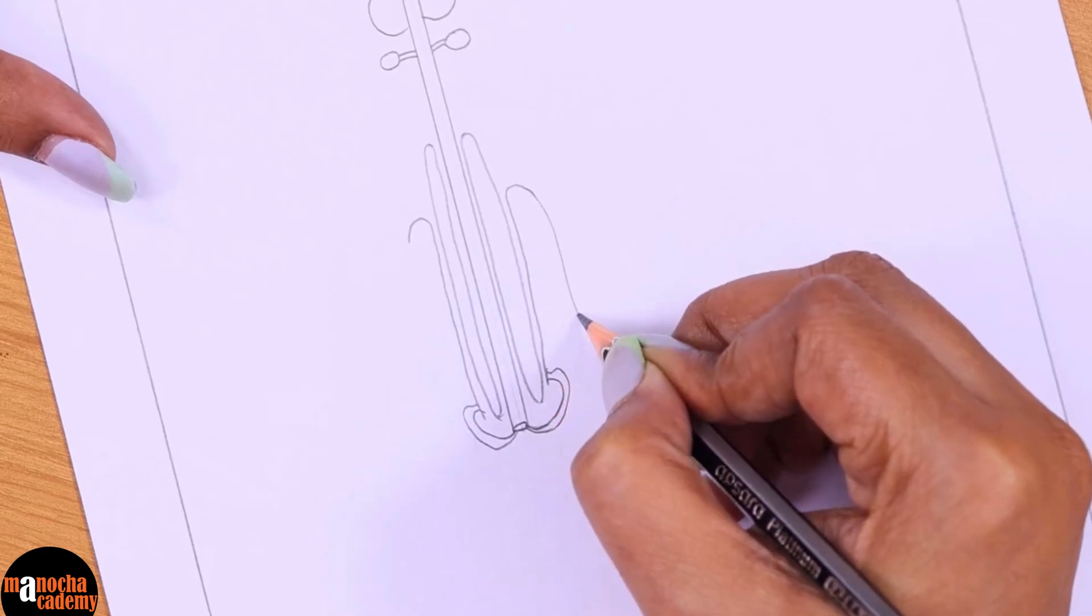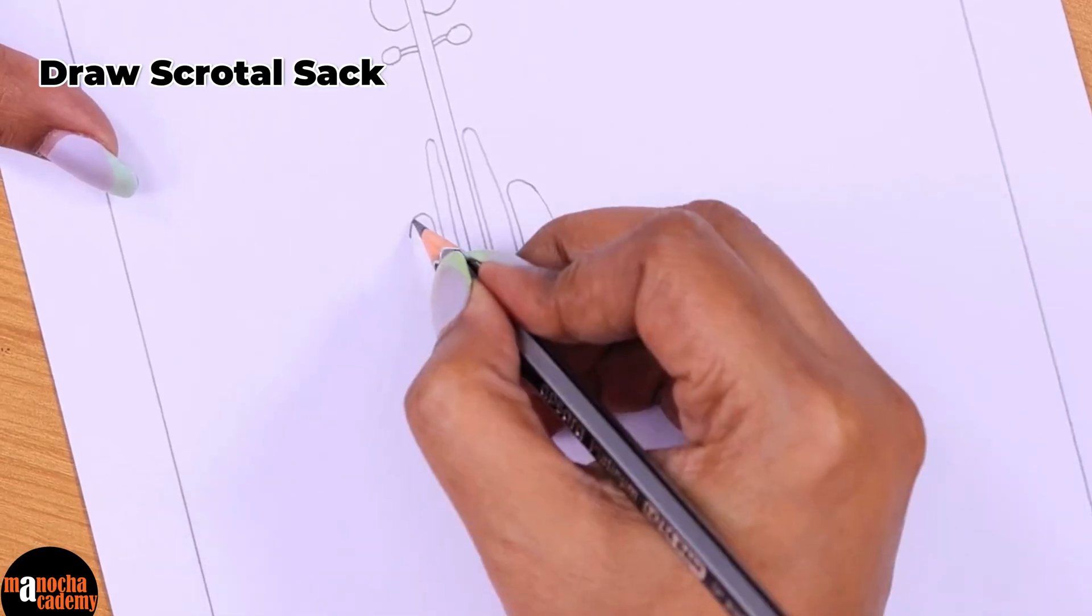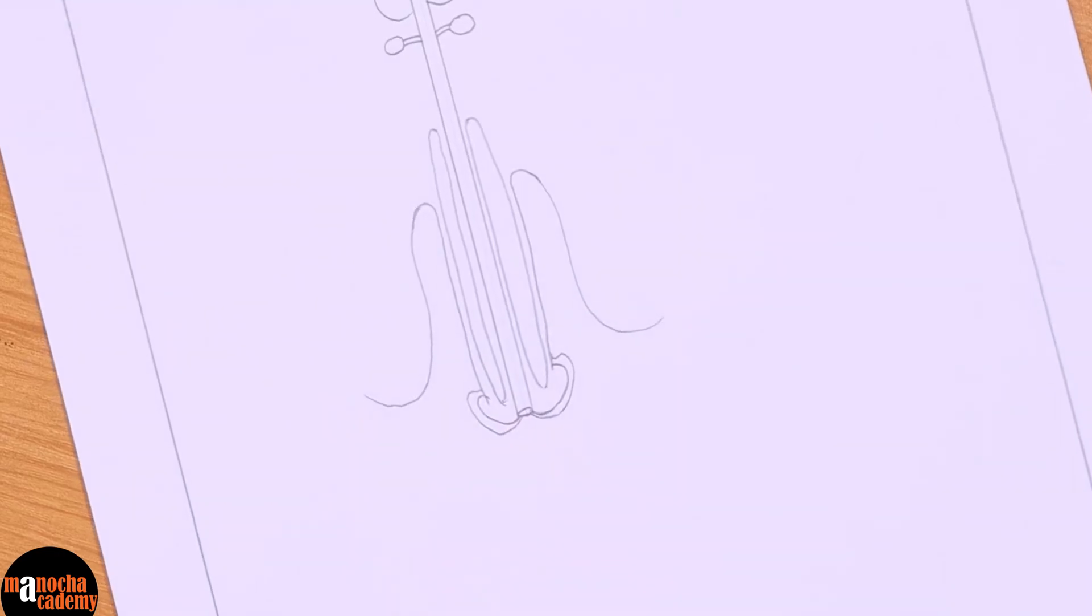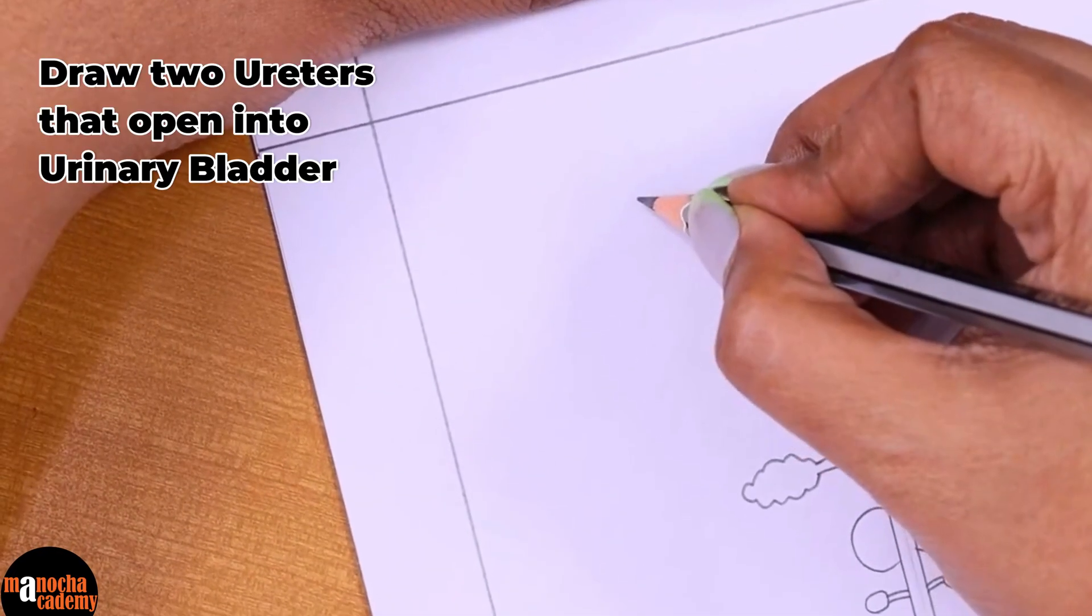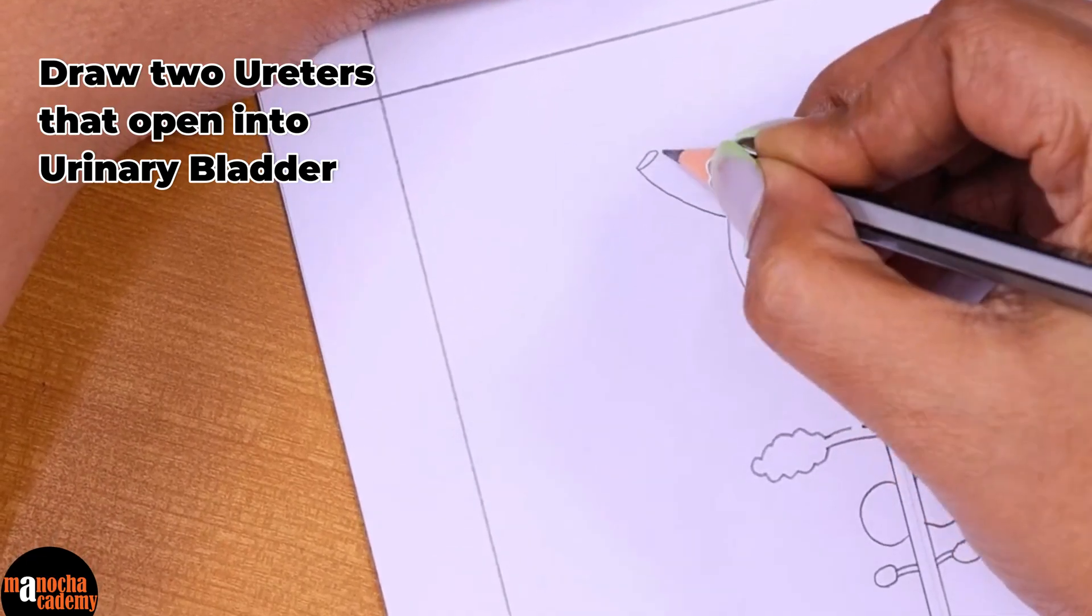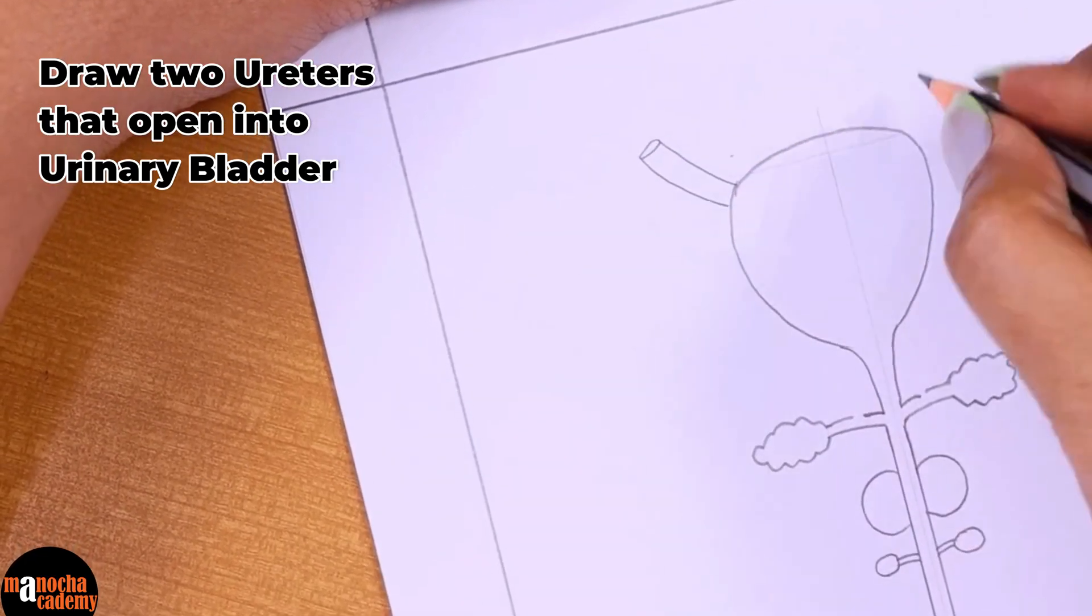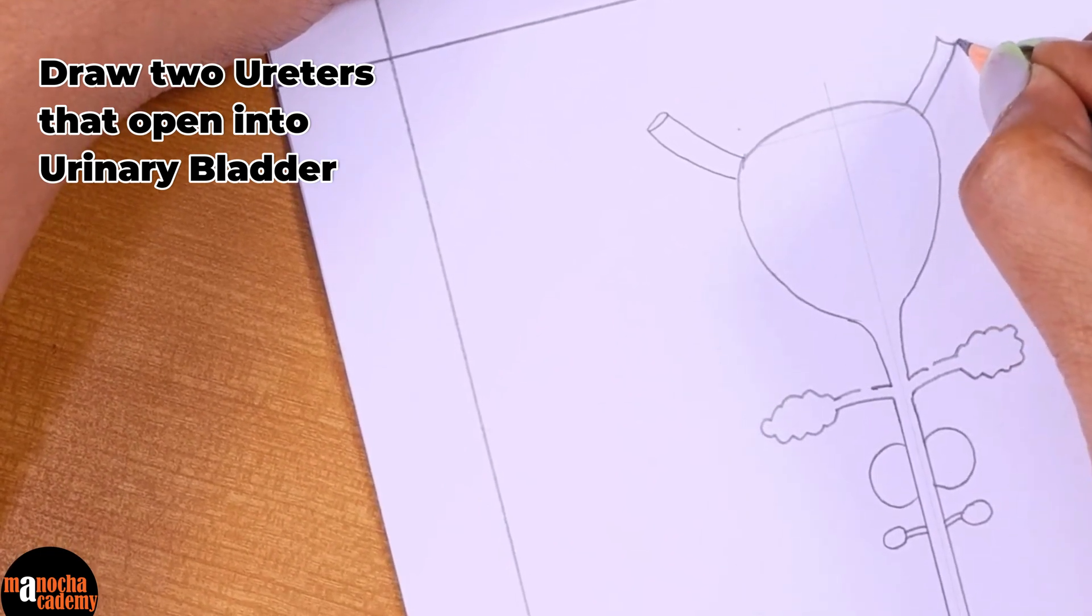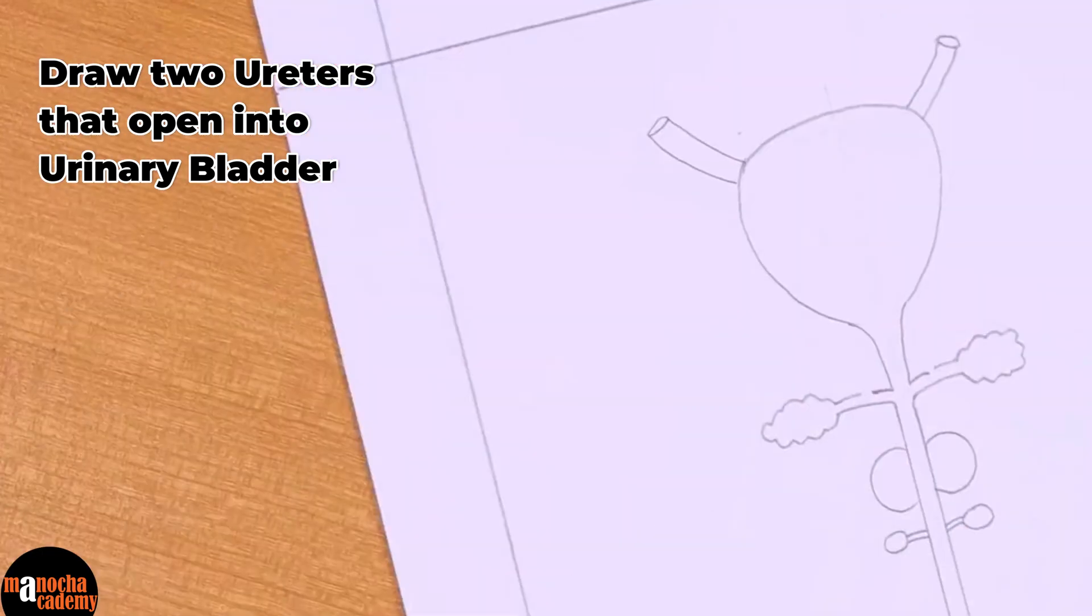Once you have drawn this boundary, we will take this same line and draw the scrotal sac. Do not draw the entire thing first, just draw this much. One more thing that we will draw are the two ureters which are bringing the urine into the urinary bladder from the kidney.